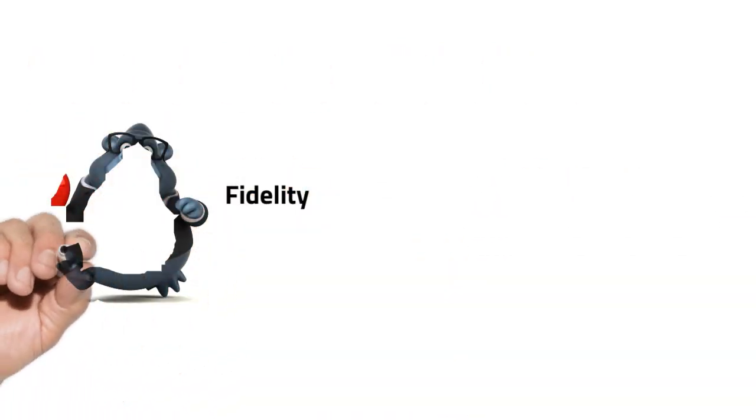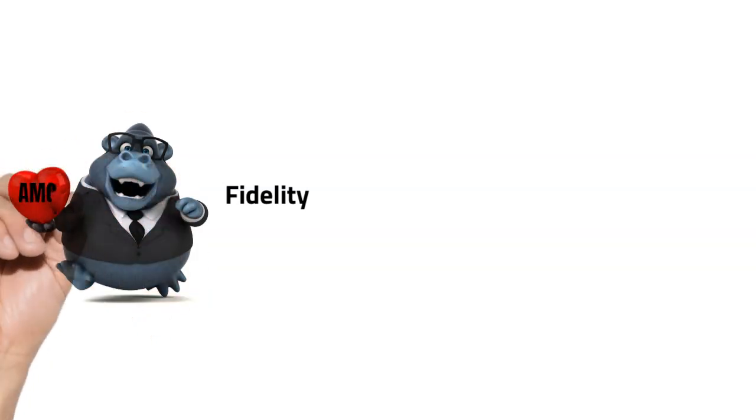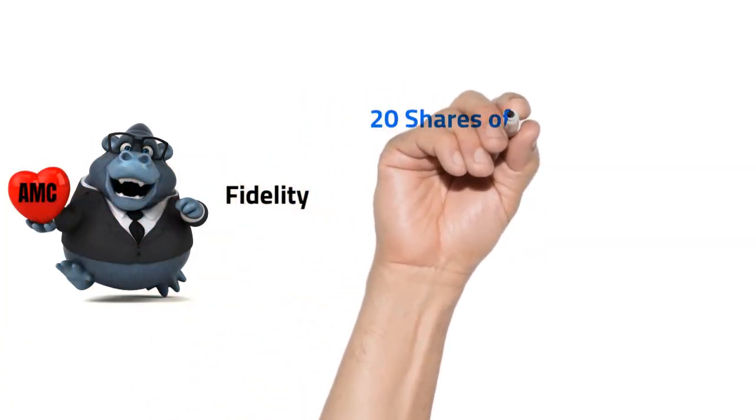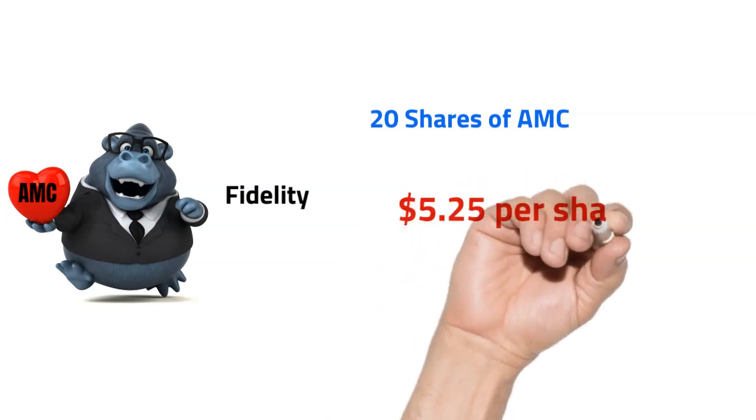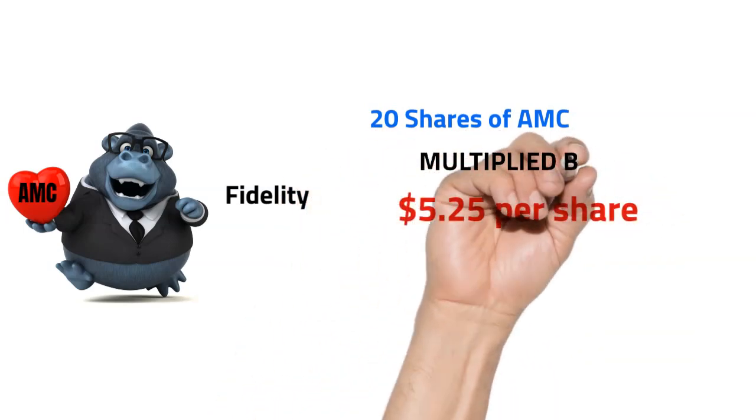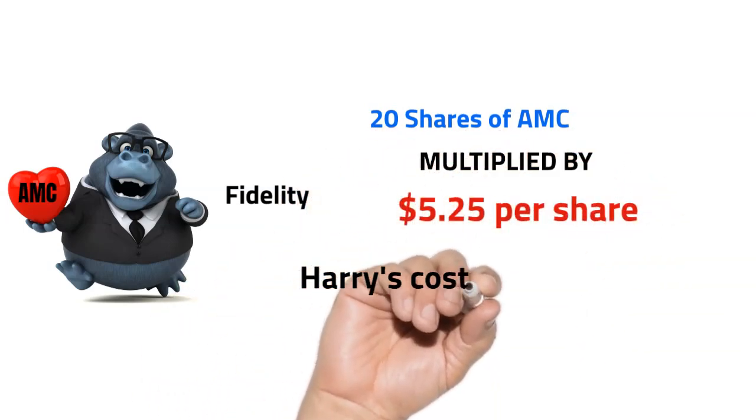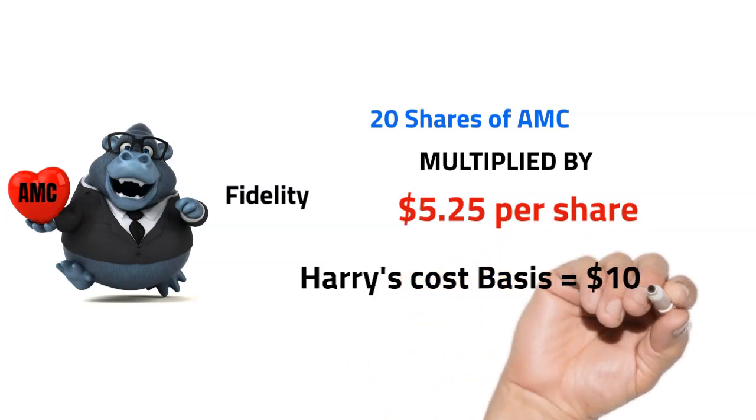So Harry, armed with this hot stock tip info the next morning after sobering up, creates a Fidelity trading account. In this account, Harry decides to buy 20 shares of the ticker symbol AMC. He feels good that he was able to lock in these 20 shares at $5.25. So multiplying his 20 shares by $5.25, he now has a cost basis of $105 even.